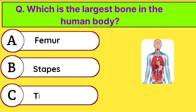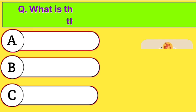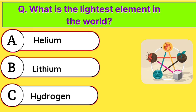Which is the largest bone in the human body? Correct answer is option A. Femur. What is the largest element in the world? Correct answer is option C. Hydrogen.